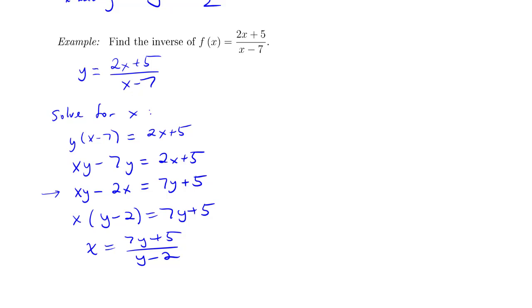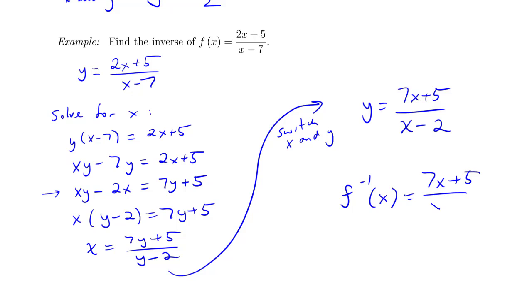So there it is, it's solved for x. So now I'm going to switch x and y. y is now 7x plus 5 over x minus 2. And there is my inverse.